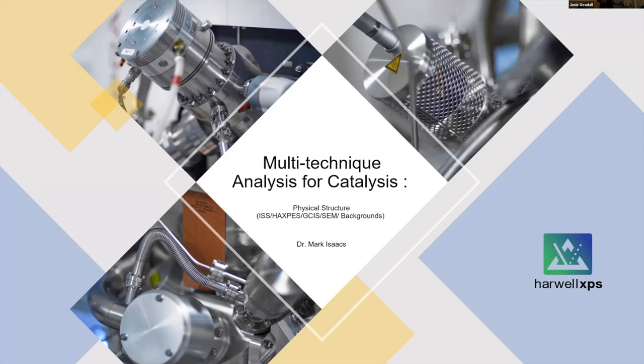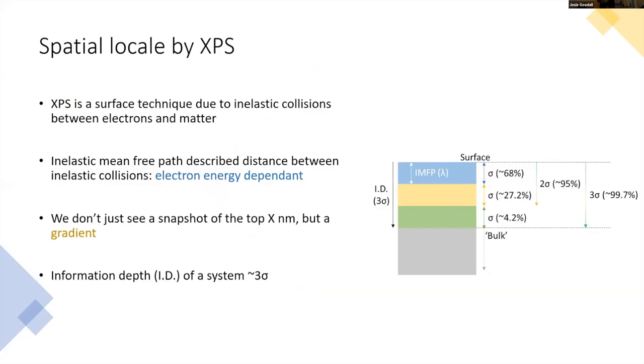First we're going to focus on some of the physical structure information we can get. Just a quick recap - XPS is a surface technique due to inelastic collisions between electrons and matter. The inelastic mean free path is the distance between successive collisions of electrons and atoms they're traveling through. When taking XPS measurements, we don't just see a snapshot from the top X nanometers of the sample, we do see a depth profile.